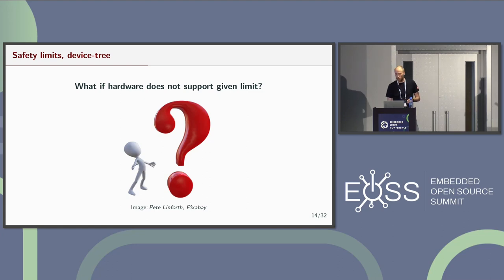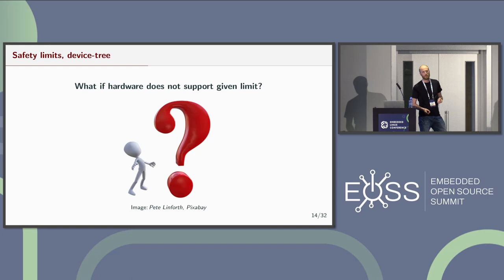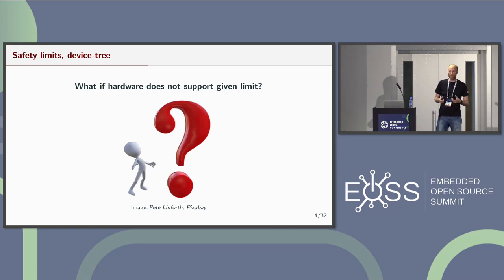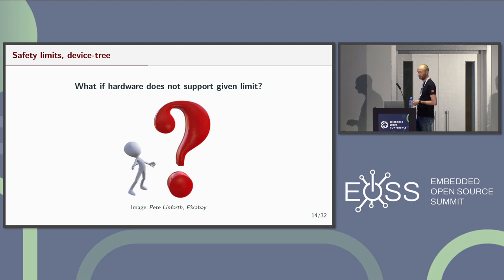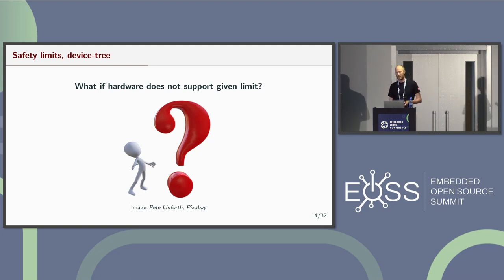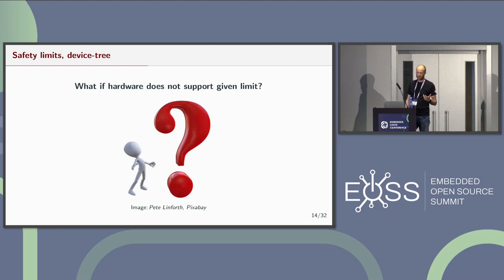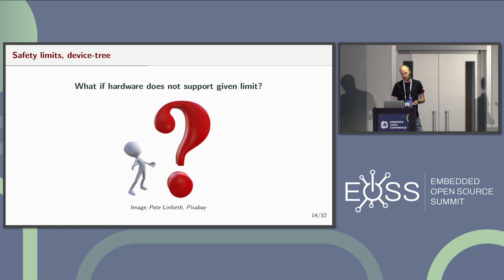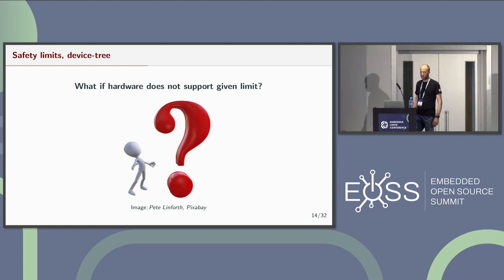The question of what to do if the hardware doesn't support the requested limits — for example if the user wants over-voltage protection at five volts but the hardware can't support that — is a good question without a good answer. There are three options: abort and return error (not ideal in regulator probe as the system might not come up), ignore it silently (not good, as users may expect protections are in place), or the current approach: print a warning and proceed.